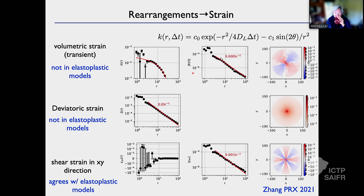A question: usually this angular dipolar response is an average over several configurations — is it the case here? That's definitely there. But for this problem the important thing turns out to be the volumetric term, which people never usually worry about — not the shear dipole. This is an average over many rearrangements, and this is from the particle simulations.